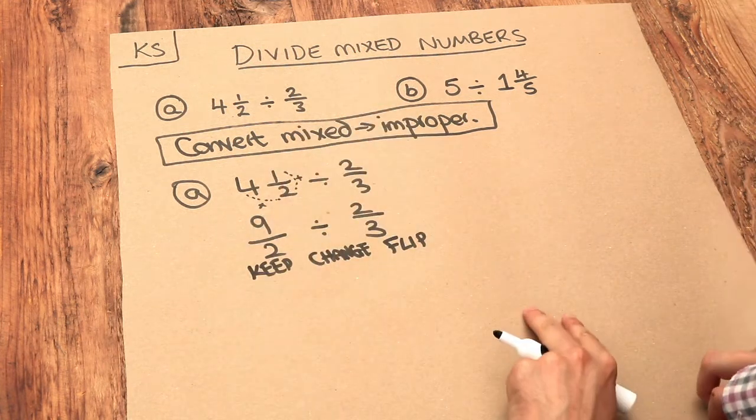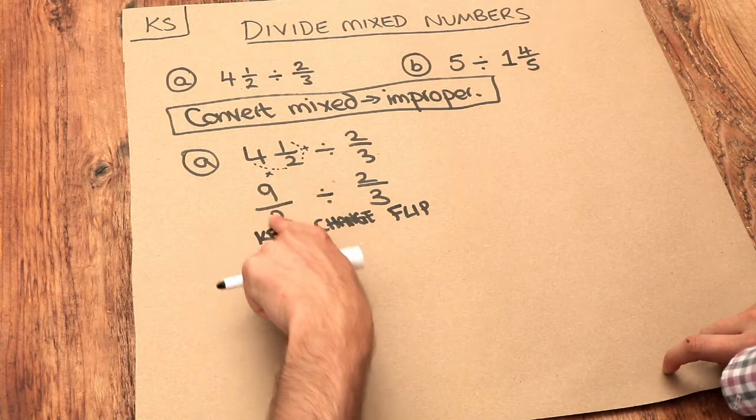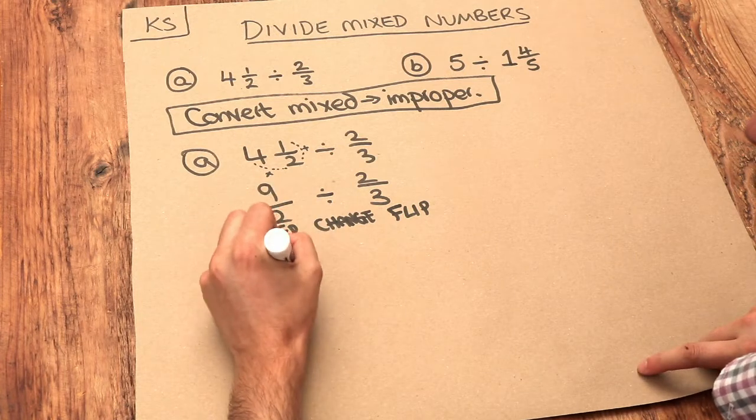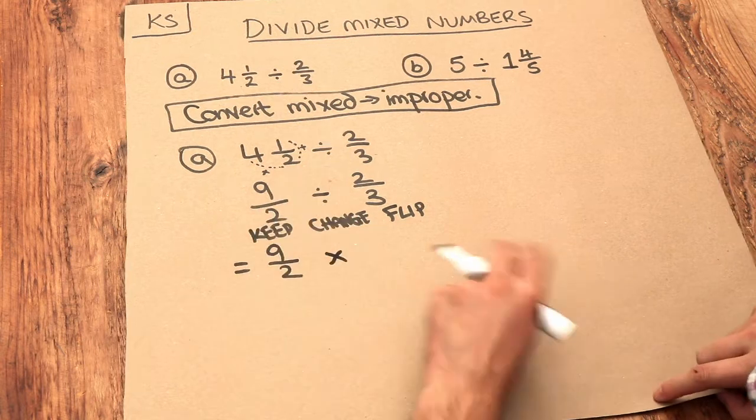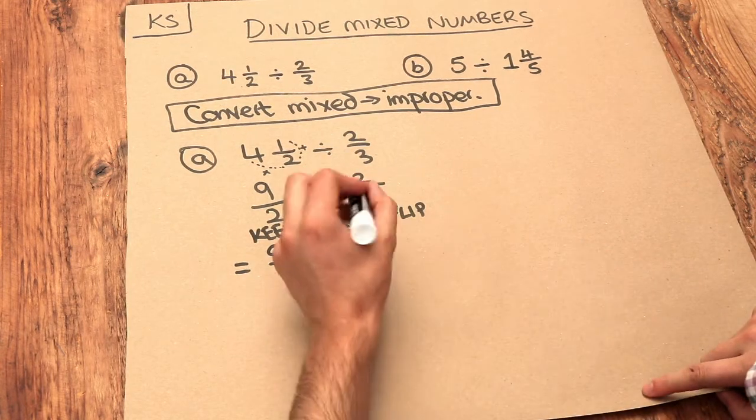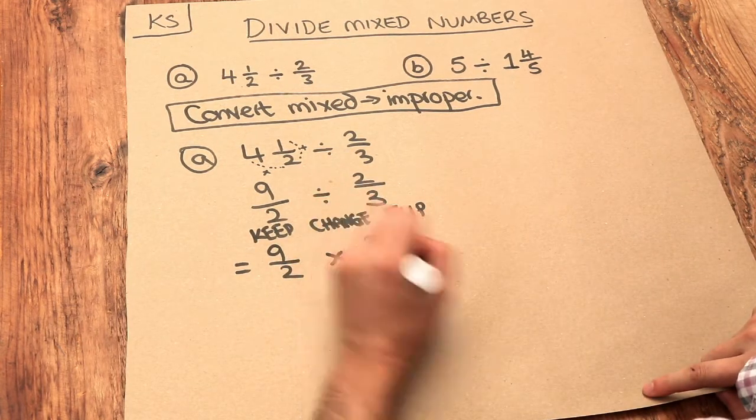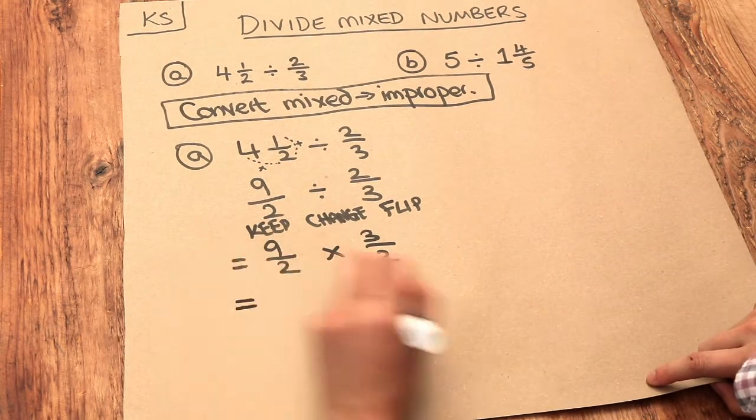We do one over it which flips it upside down. So keep this as it is, change the divide into a times, and flip the second fraction so that becomes 3 over 2, and then we can multiply in the usual way.